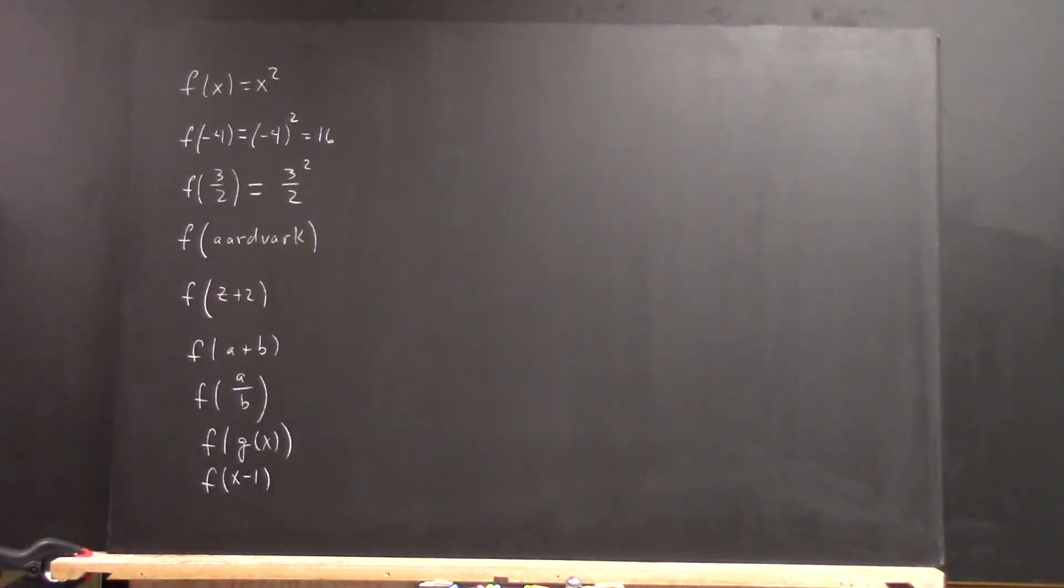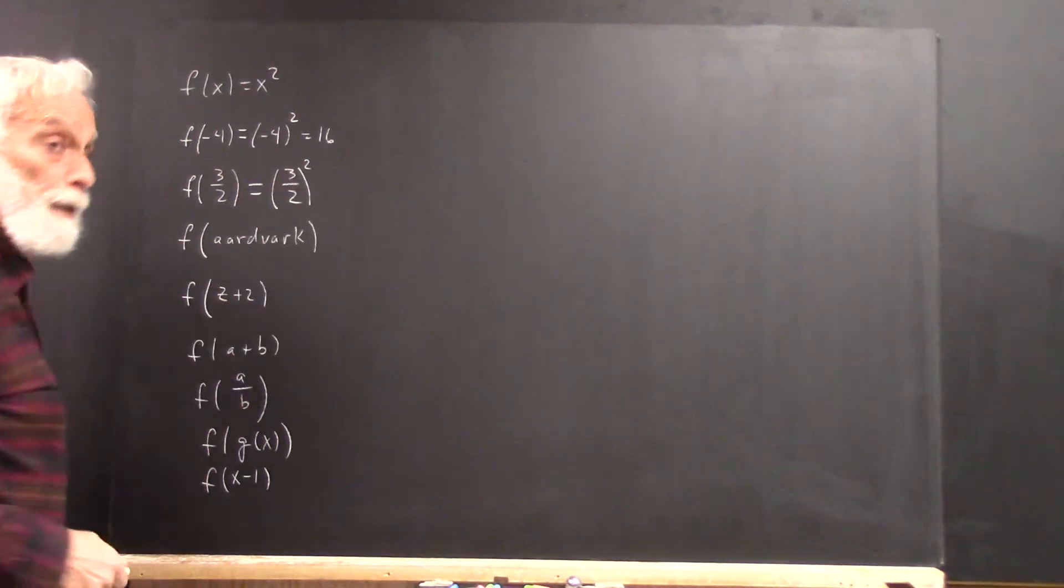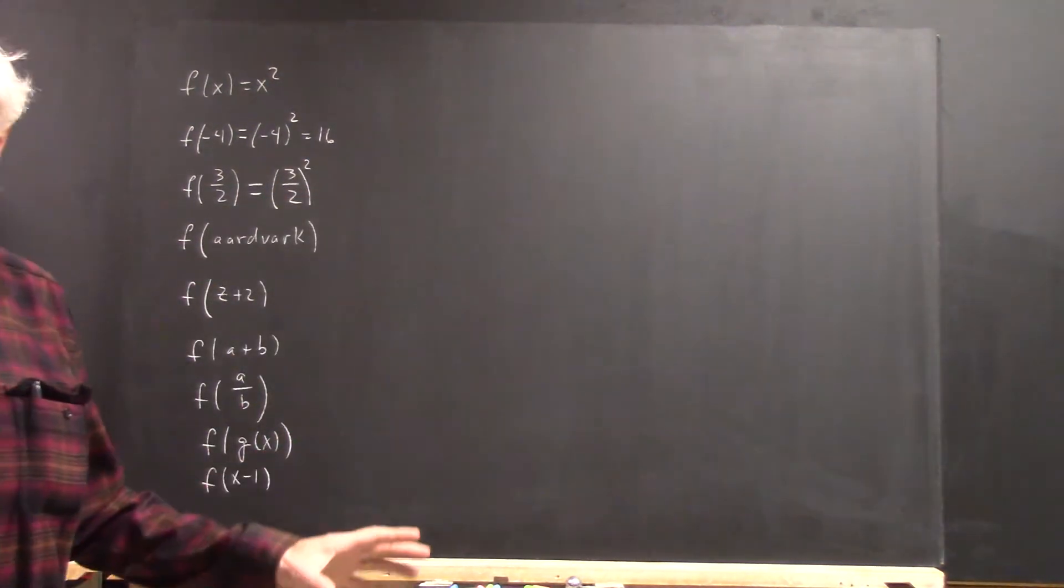What's wrong with that? This is 3 squared over 2, it's not 3 halves squared. You've got to square the whole line thing, right? So be careful about that.